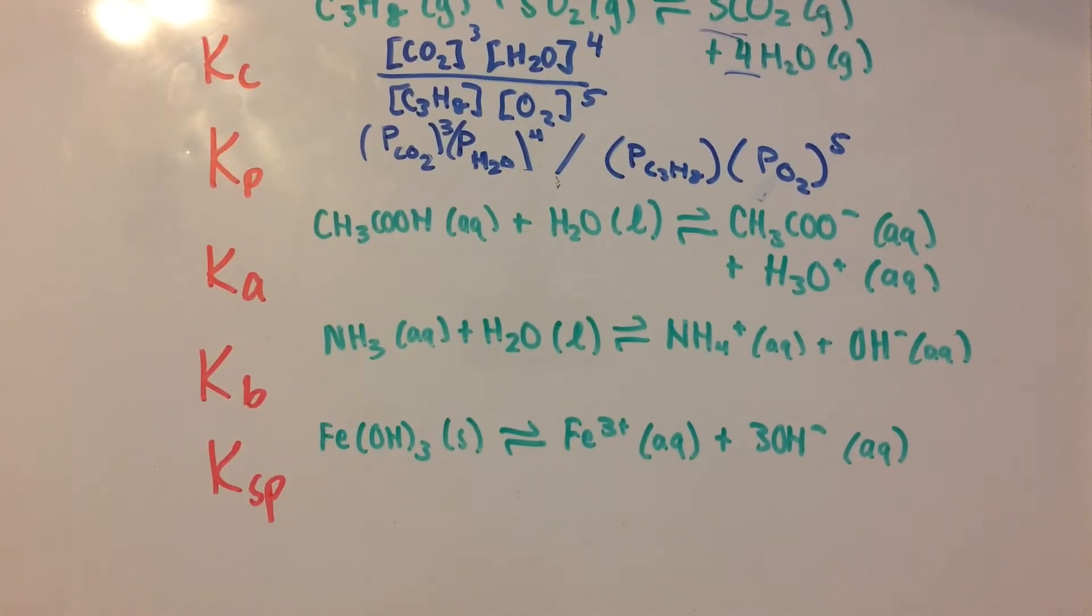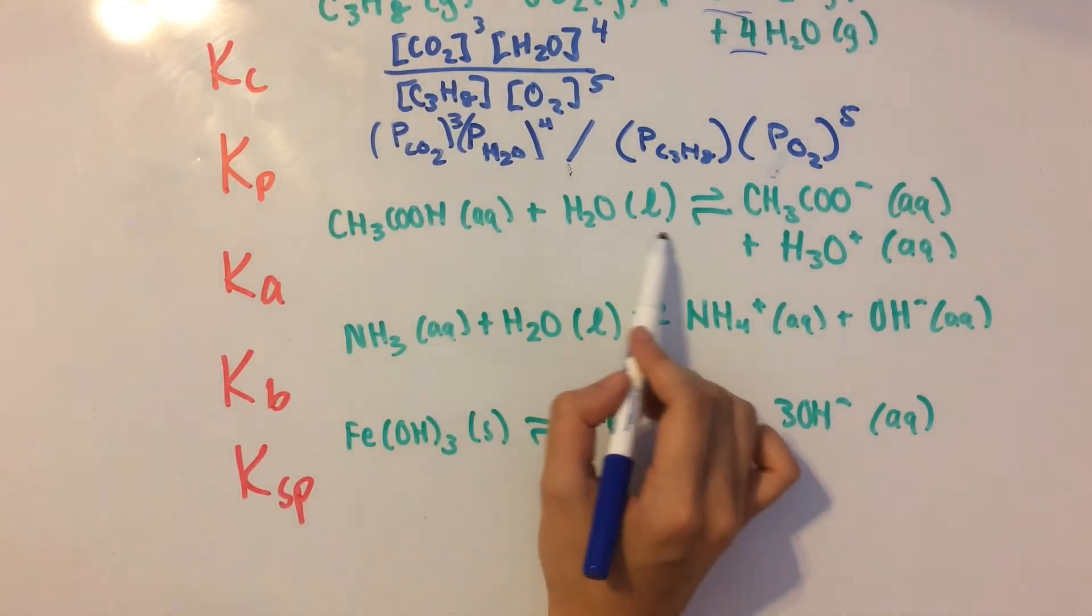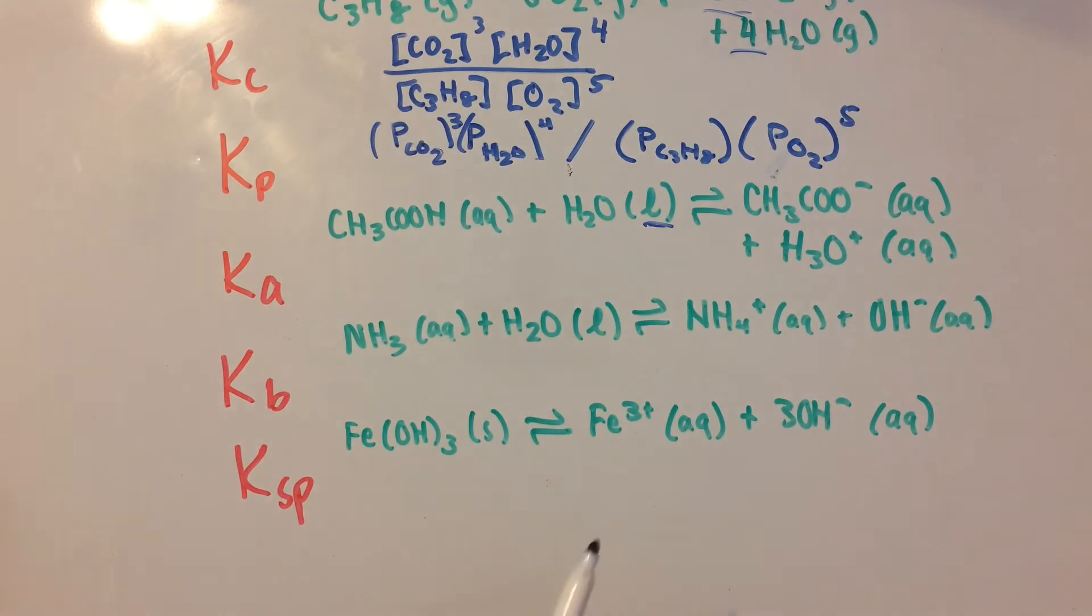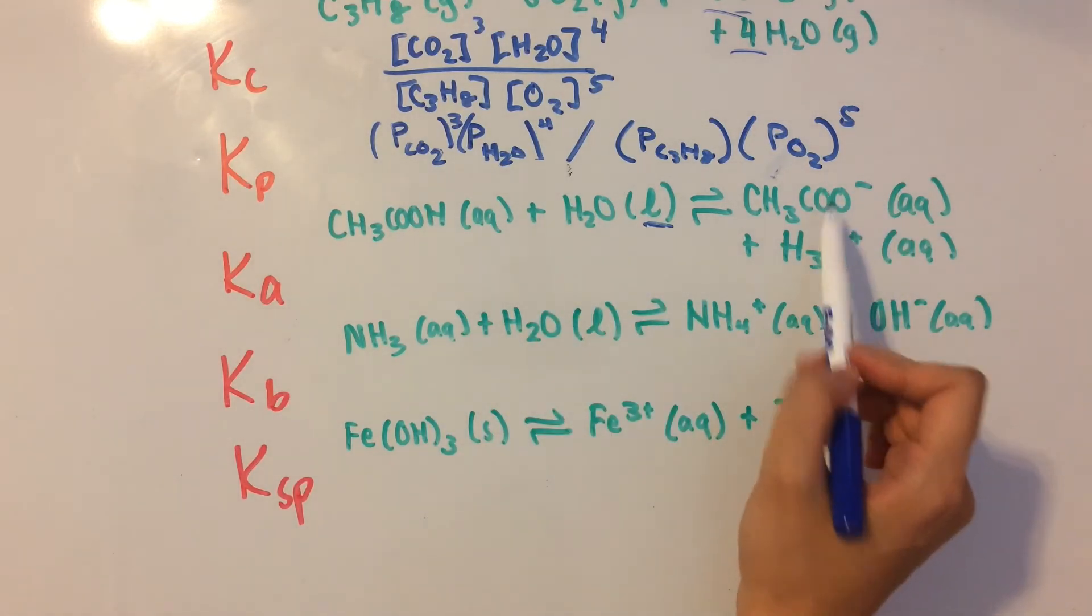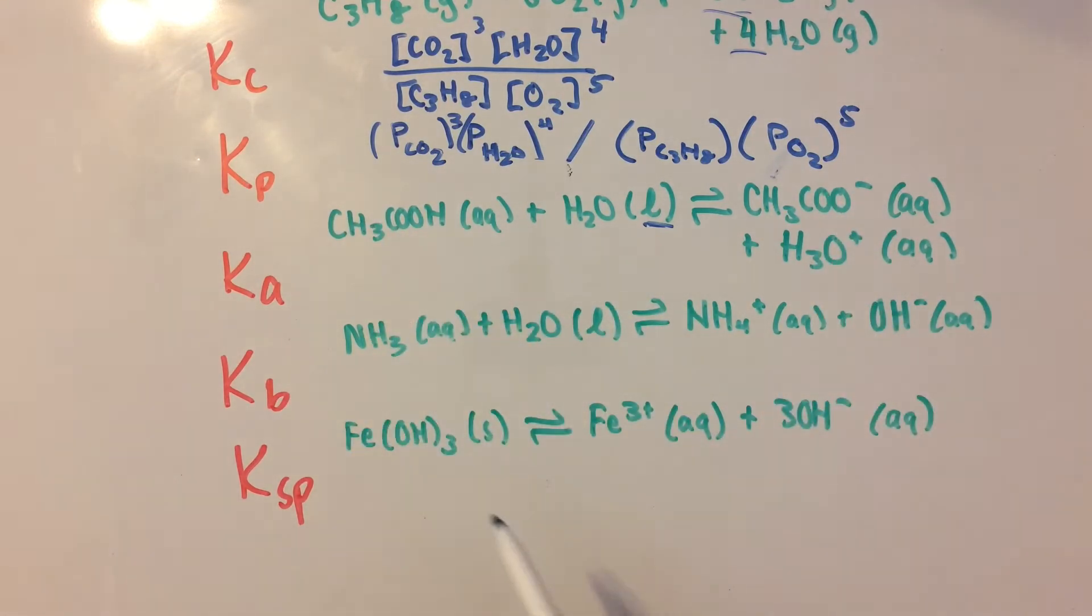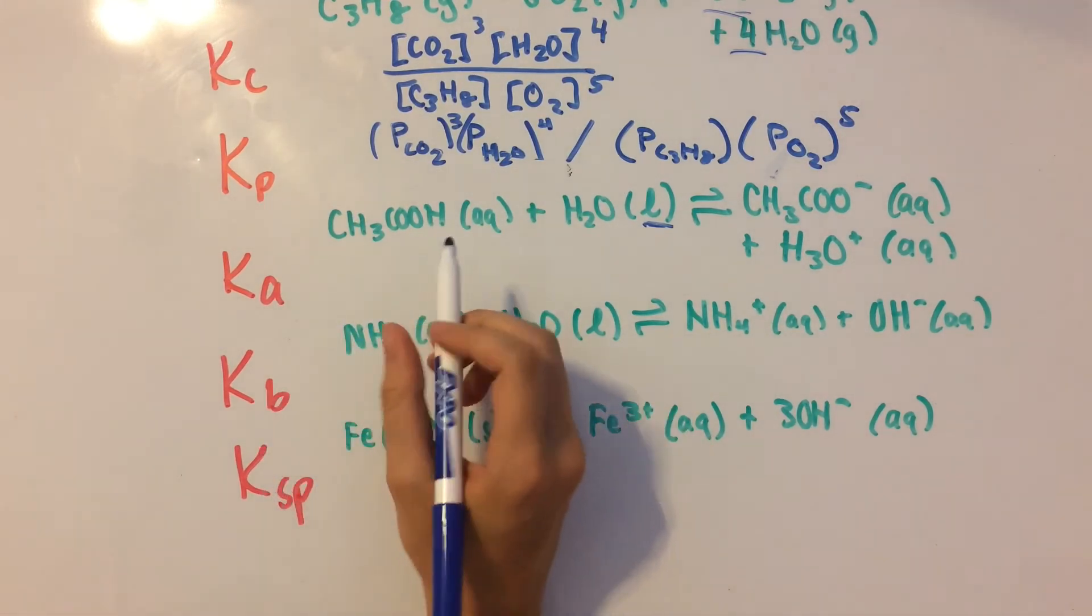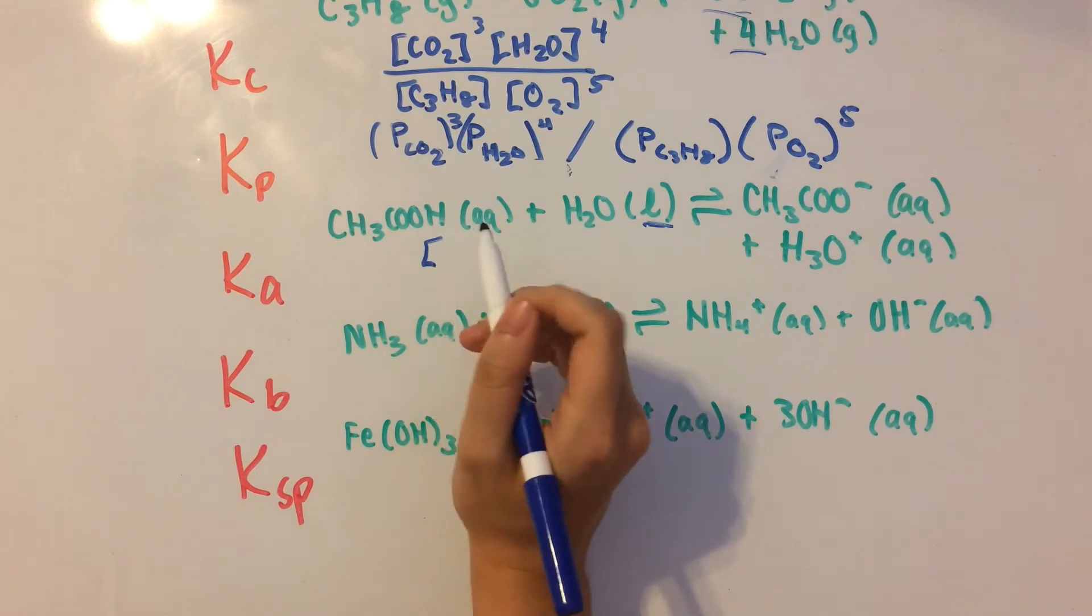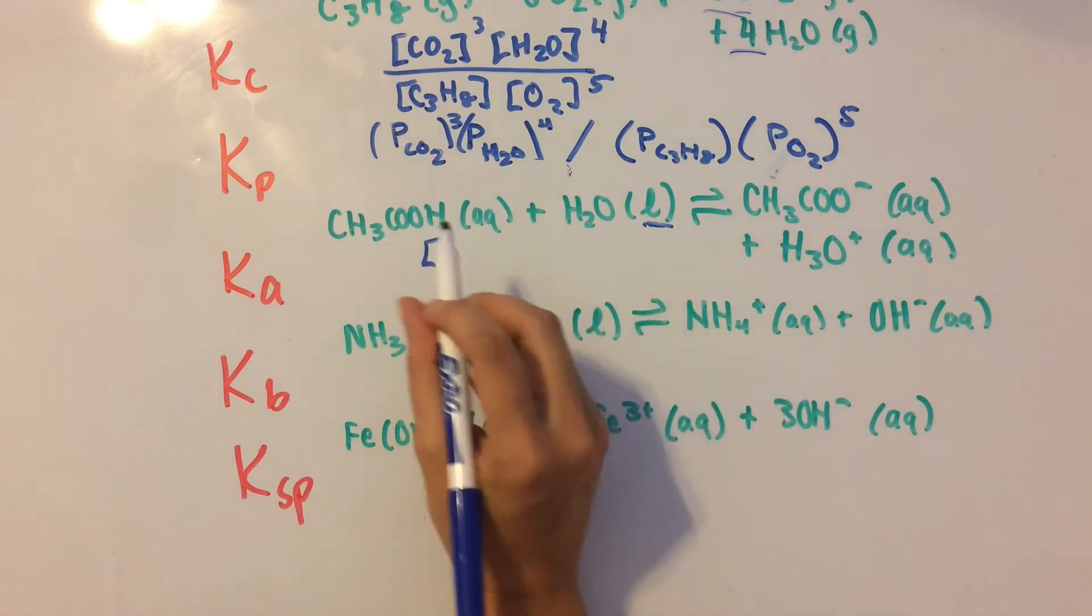Now moving on to Ka, we have a liquid here. So remember, you can't really find the concentration of a pure liquid such as H2O. So we're going to leave that out of the expression. It's just going to be these two over this. So for Ka, Kb, and Ksp, we're just going to write it out as concentrations. These are basically just really specific ways of denoting the concentration equilibrium expression.